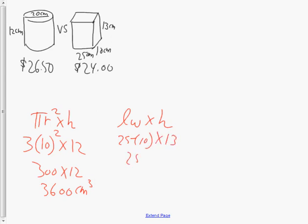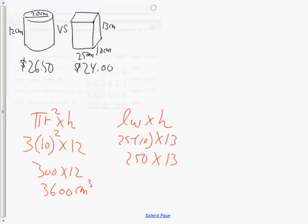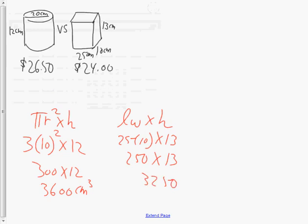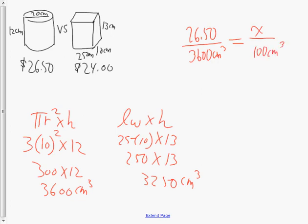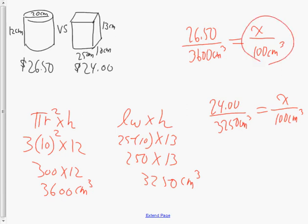For the rectangular prism, volume is length times width times height: 25 times 10 times 13. That's 250 times 13, which is 3,250 centimeters cubed. Now compare prices: the first is $26.50 for 3,600 centimeters cubed; the second is $24 for 3,250 centimeters cubed. We're creating unit rates for both — cost per 100 centimeters cubed — to see which is cheapest.